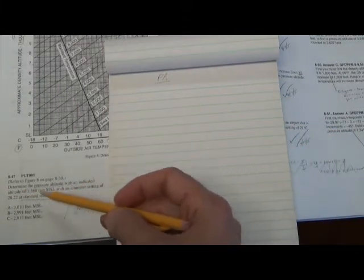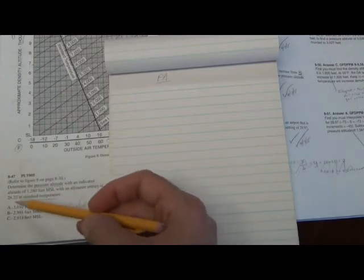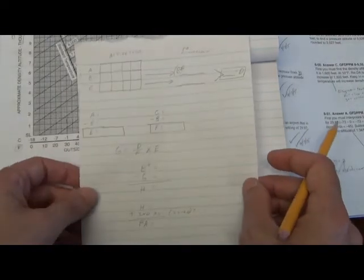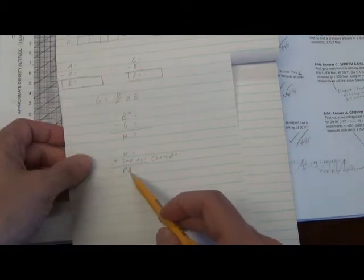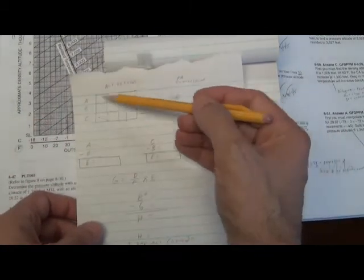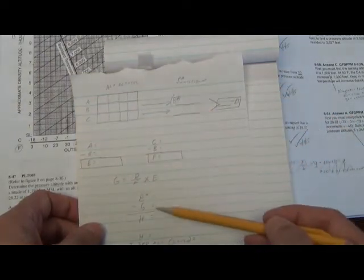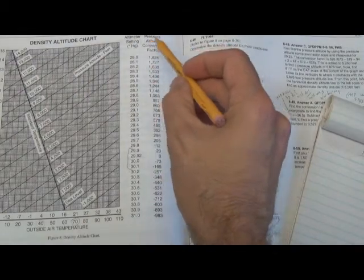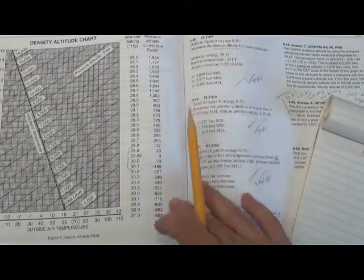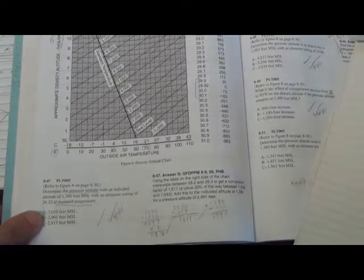Determine the pressure altitude given an indicated altitude and an altimeter setting. I want you to look at my worksheet here. If you look down here, the answer you're finally going to get is going to be called PA or pressure altitude. So all we need to do is plug in the numbers into this box and then follow the flow. How do we get the numbers for the box? Most of it's in the question and some of it is in this table here, which I call the pressure altitude conversion factor table.